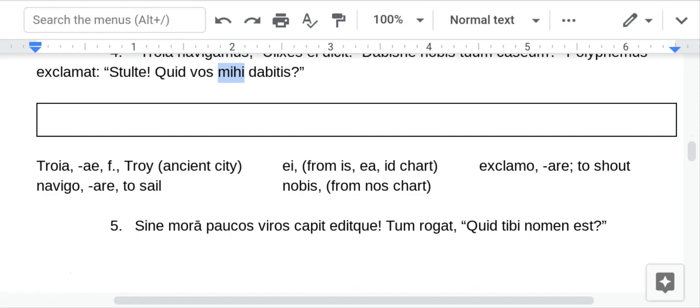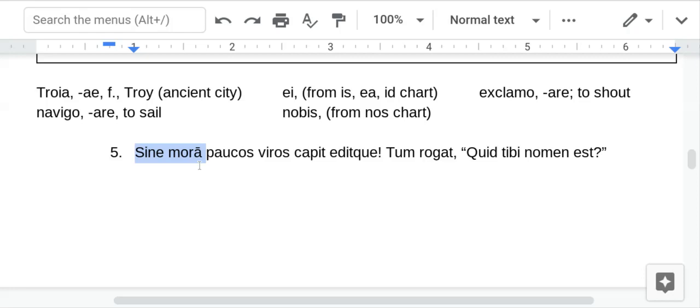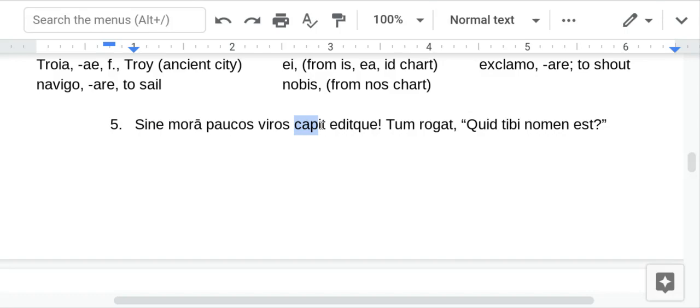Without delay. Mora is delay. We've seen this phrase a few times. Without delay. He takes. Capio is the verb seize. He seizes or he takes a few men. You can see the accusative direct object endings here. Without delay. He seizes a few men. And he eats. And you can put like a them in here. And he eats them. Or you could have done, he seizes and eats a few men.